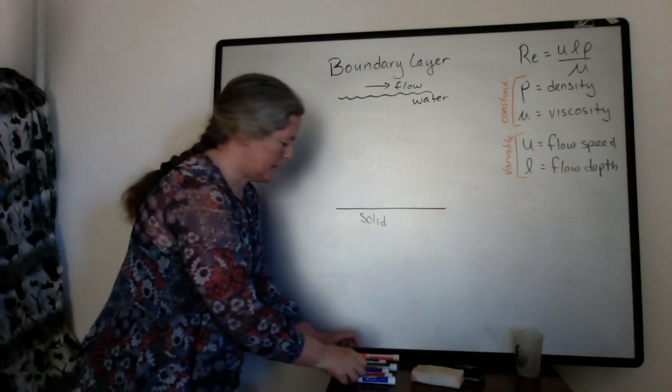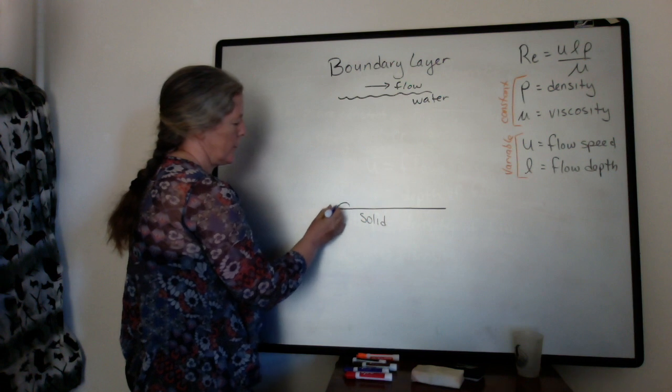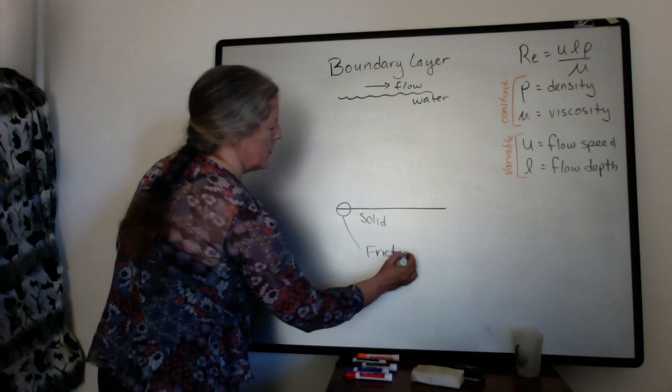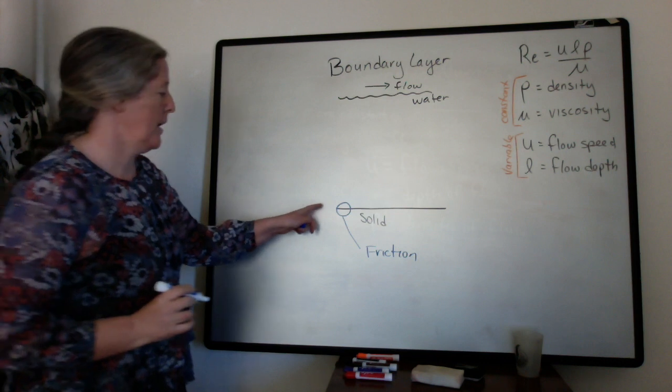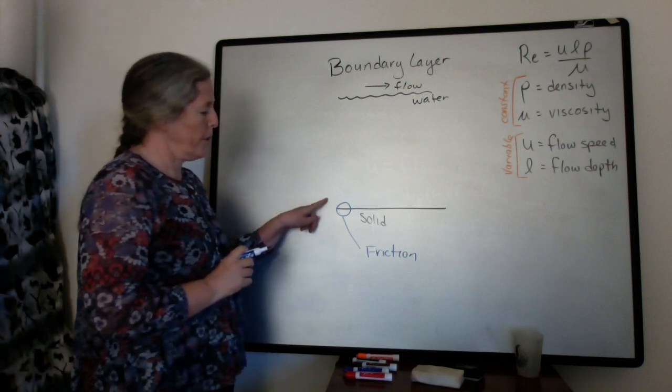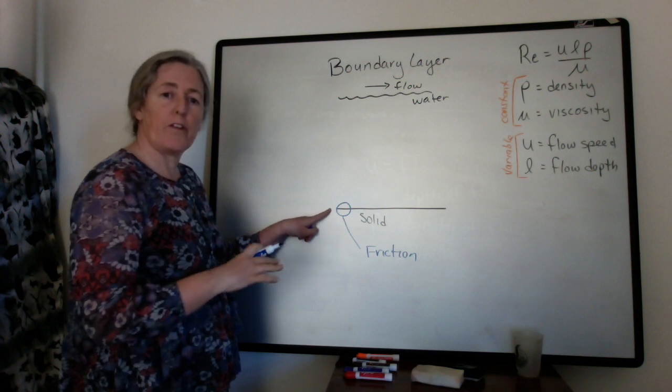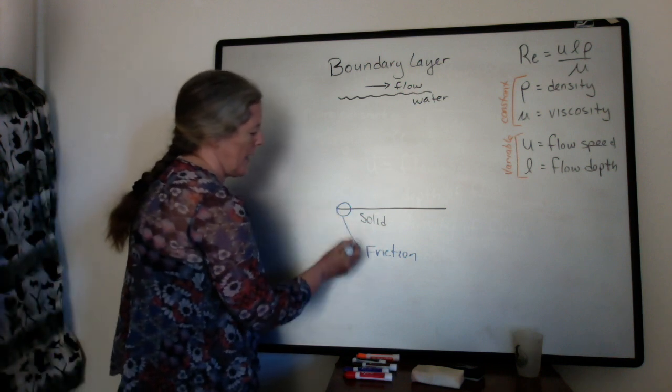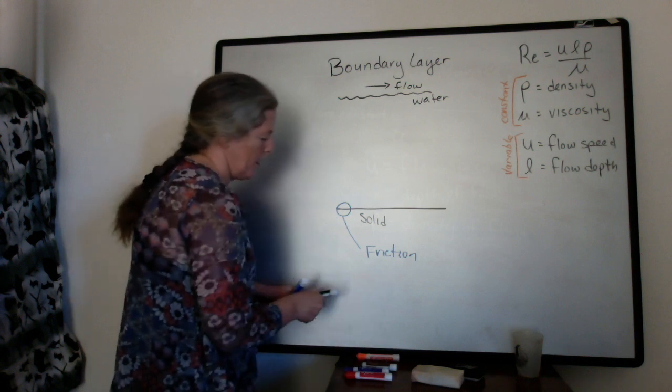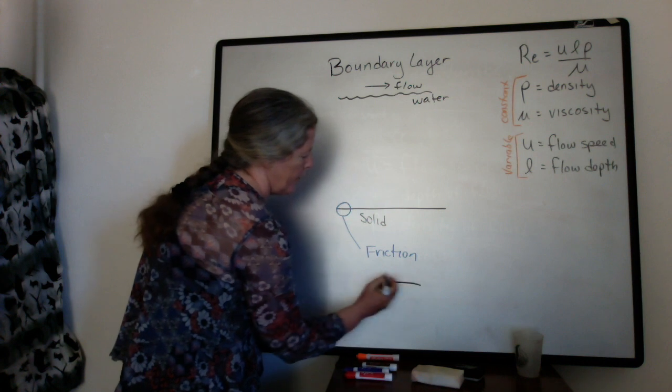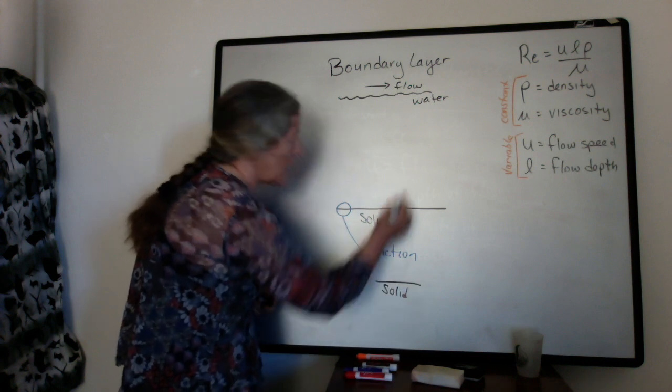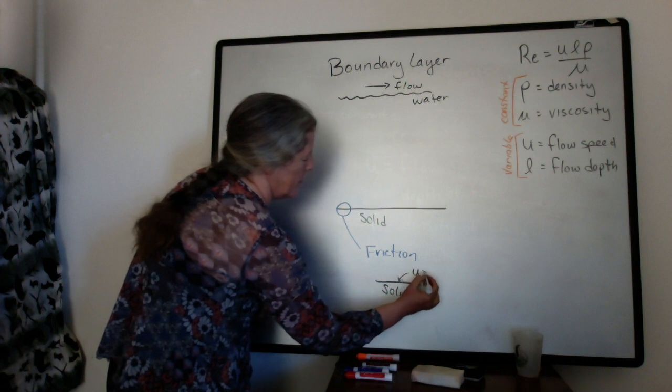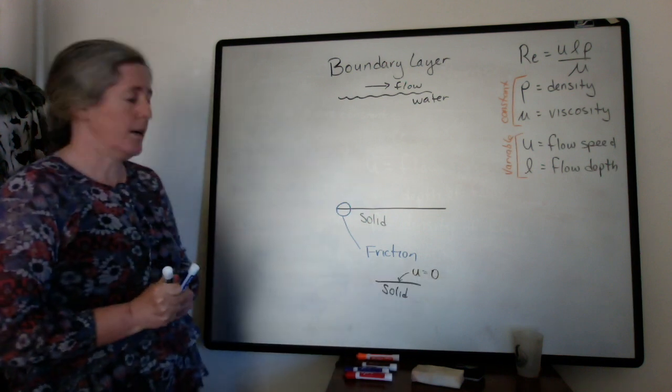One of the things that happens at the base of the flow, if we look at this right here, there's friction between the surface and the solid. That's because the water molecules flowing are interacting with the bottom of the flow, which is stationary, and those hydrogen bonds create a boundary layer. Right at this solid surface, the flow speed right above it is zero. So our flow speed is u, so right here, u equals zero, because of that friction.